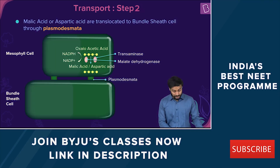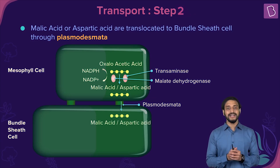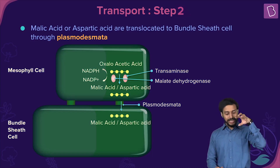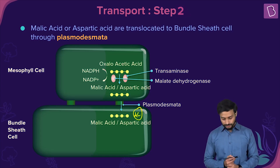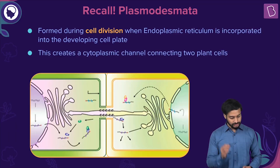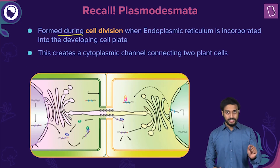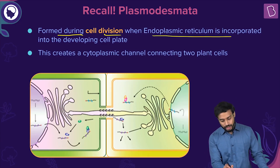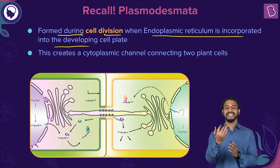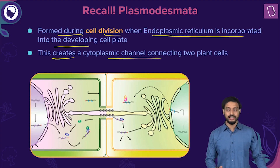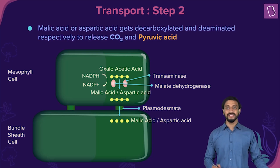The next step is transport. Malic acid or aspartic acid moves from the mesophyll cells to the bundle sheath cells through plasmodesmata. Plasmodesmata are cytoplasmic channels connecting adjacent plant cells — they form when endoplasmic reticulum is incorporated into the developing cell plate during cell division.